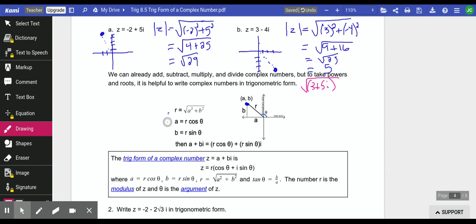Using right triangle trig, if this is theta, an angle, a is going to be r cosine theta. Because if you take the cosine of theta, that's adjacent over hypotenuse. If you solve that for a, that's where it comes from. And b is r sine theta. Same thing, if you take the sine of theta, that's opposite over hypotenuse, and solve for b.